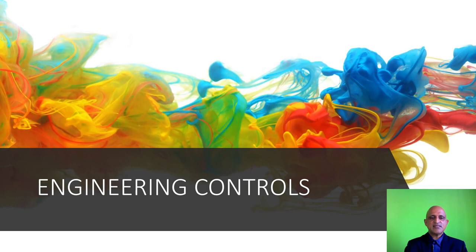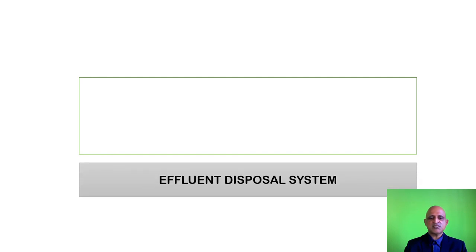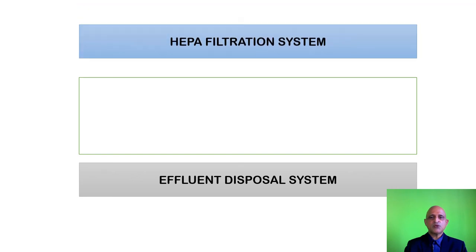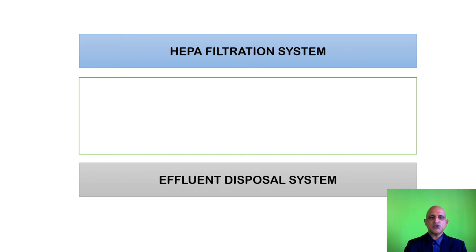The third control is the engineering control. To understand engineering controls, you need a basic understanding of your laboratory layout. Consider a conceptual laboratory as an enclosed space. If management decides to upgrade this to a BSL-2 or BSL-3 laboratory, the first thing to address is the effluent disposal system, responsible for disposing of all waste and liquids from the facility. You then add a HEPA air filtration system, which requires designing two additional floors to house both the HEPA filtration system and the effluent disposal system.